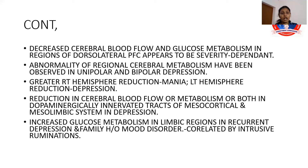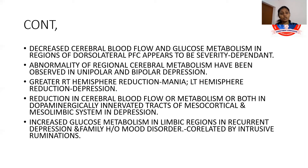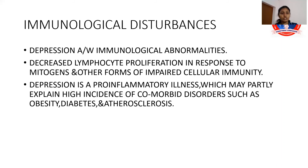Decreased cerebral blood flow and glucose metabolism in the dorsolateral prefrontal cortex appears to be severity-dependent. Abnormalities of regional cerebral metabolism have been observed in both unipolar and bipolar depression. Greater right hemispheric reduction is seen in mania, while greater left hemispheric reduction is seen in depression. Reduction in cerebral blood flow or metabolism — or both — occurs in the dopaminergically innervated tracts of the mesocortical and mesolimbic systems. Increased glucose metabolism in limbic regions in recurrent depression with family history of mood disorder correlates with intrusive ruminations.